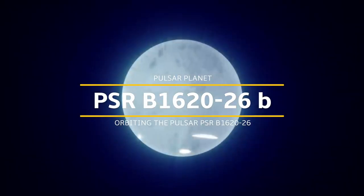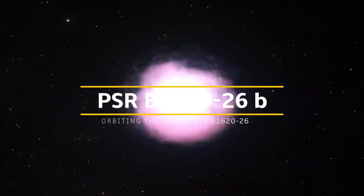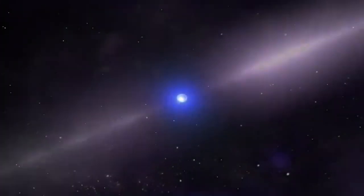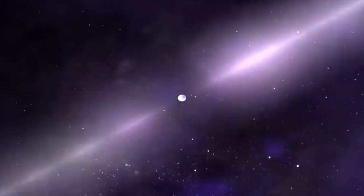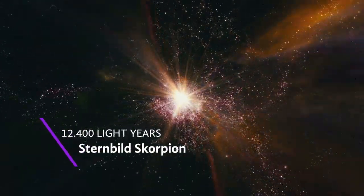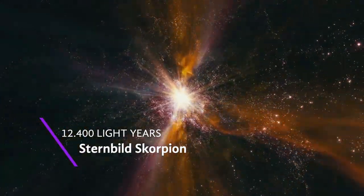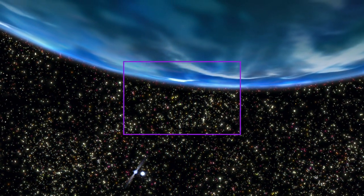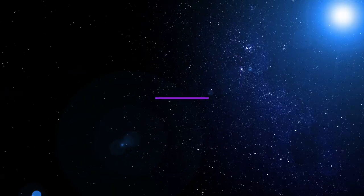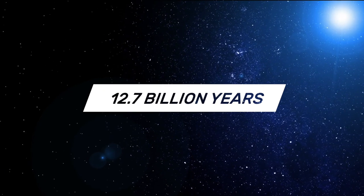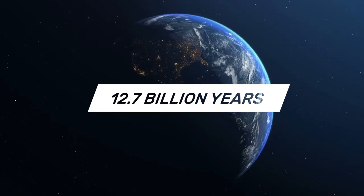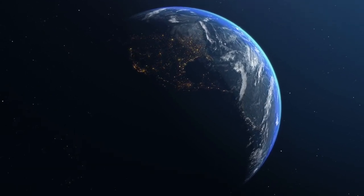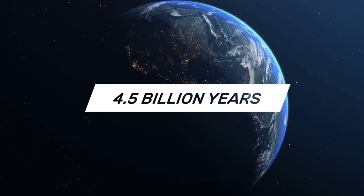PSR B1620-26b is a pulsar planet orbiting the pulsar PSR B1620-26 in the globular cluster Messier 4. It is located about 12,400 light years away in the constellation Scorpio. The exoplanet is the oldest existing and known exoplanet, assumed to be 12.7 billion years old. With an estimated age of 13 billion years, the planet is more than twice as old as Earth at 4.5 billion years.